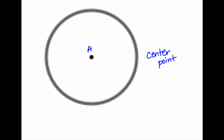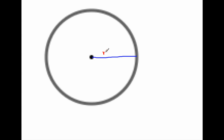The first part of a circle is the center point. The next part, once we have the center point defined, is a line segment that goes from the center to a point on the circle. Any line segment that goes from the center to a point on the circle we call the radius.